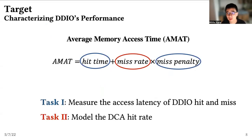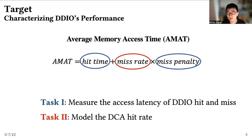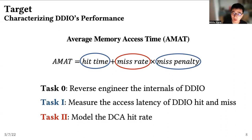In order to characterize the performance of DDIO, we use the well-known data on average memory access time formula. The performance of a cache system depends on two issues: first, the hit rate, and second, the penalty of a cache miss. But to model both, we need to learn more details about DDIO that Intel does not reveal.